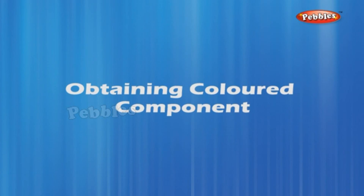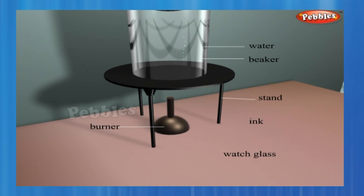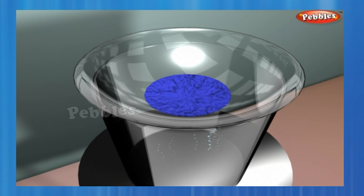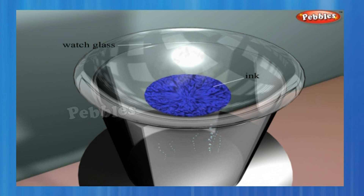Fill half a beaker with water. Put a watch glass on the mouth of the beaker and place a few drops of ink on the watch glass. Now start heating the beaker — we do not want to heat the ink directly. You will see that evaporation is taking place from the watch glass. We find that ink is a mixture of a dye in water. Thus, we can separate the volatile component (the solvent) from its non-volatile solute by the method of evaporation.